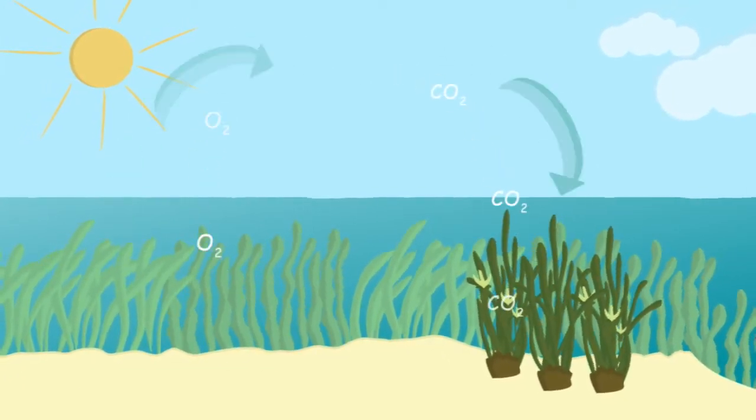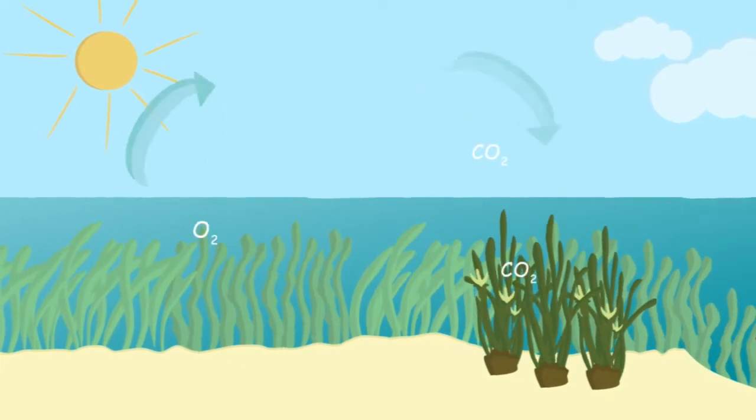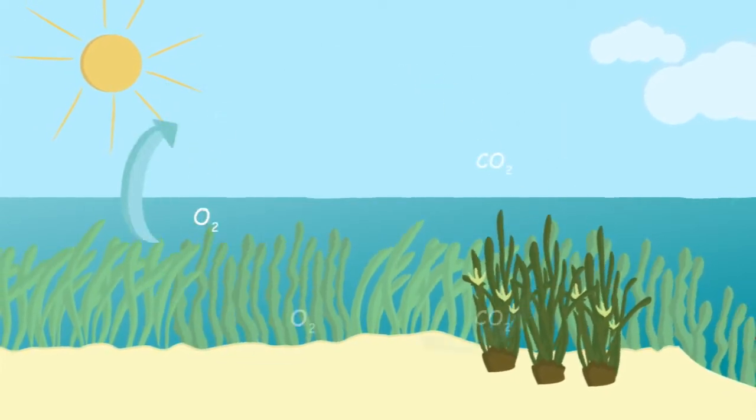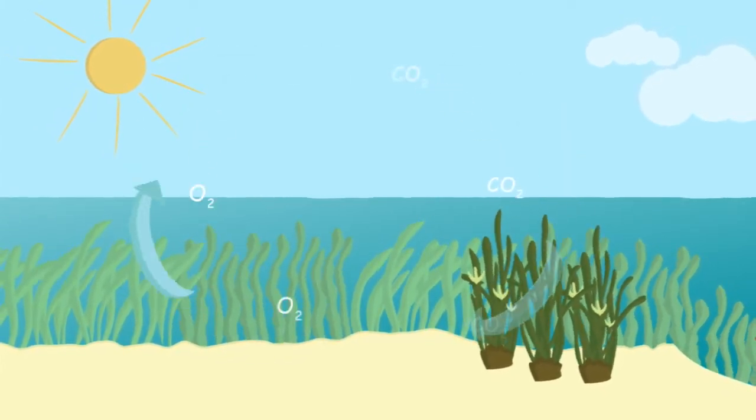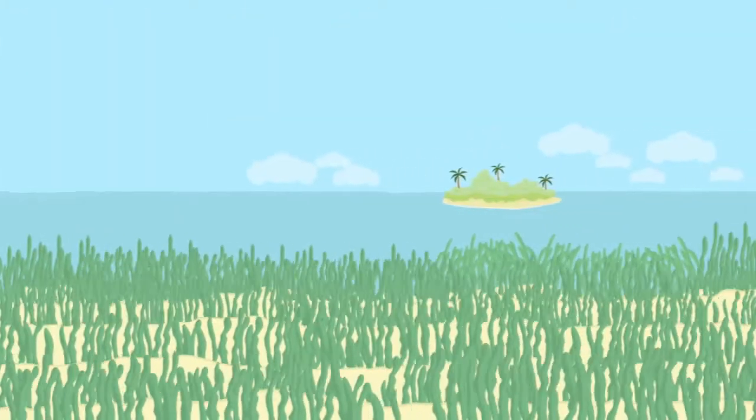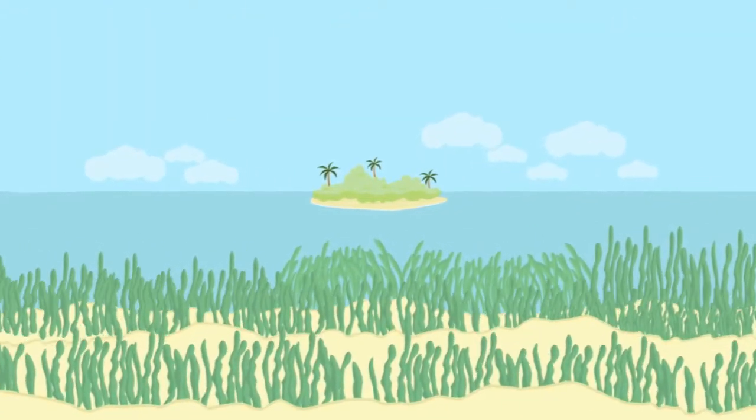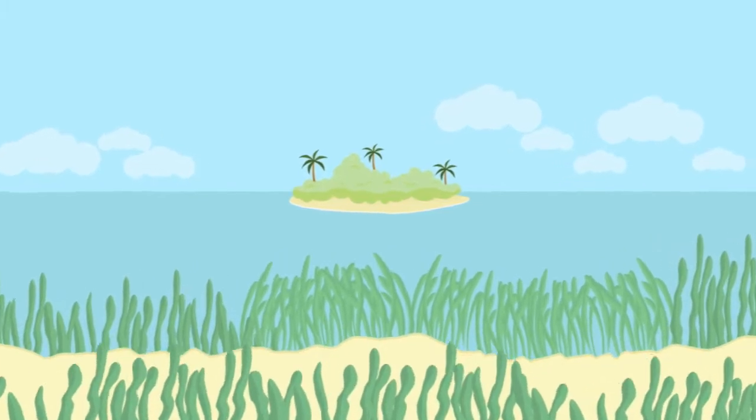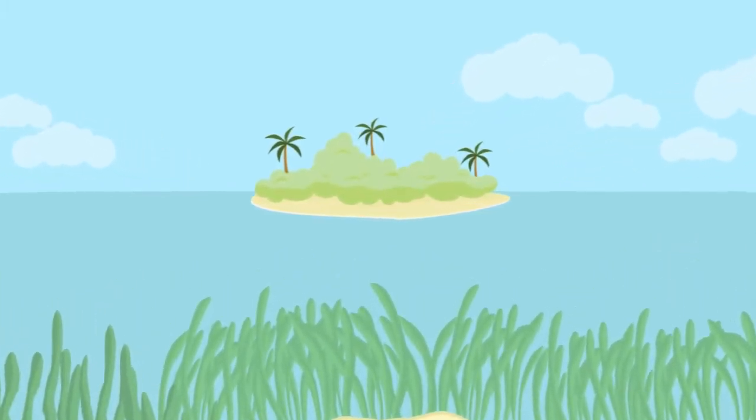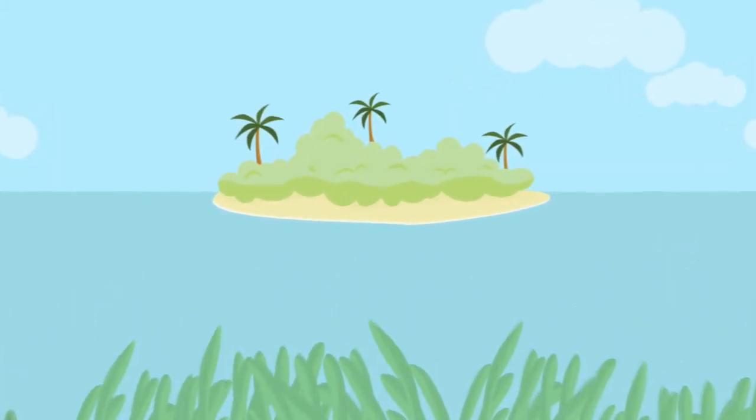Seagrasses act as carbon sinks and deposit most carbon in the sediment beneath them. Seagrasses can also form large underwater meadows called seagrass beds. These beds are usually found around islands and on reef flats in shallow water areas.